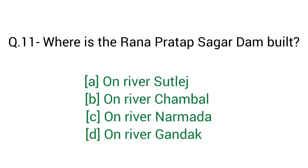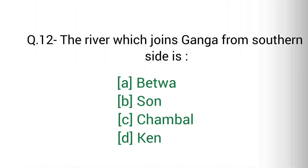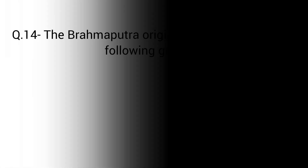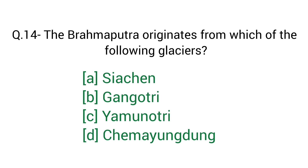Question number 11: Where is the Rana Pratap Sagar Dam built? Right answer option B: On river Chambal. Question number 12: The river which joins Ganga from the southern side is — right answer option B: Sone. Question number 13: Which of the following rivers flows from east to west and makes an estuary? Right answer option C: Narmada. Question number 14: The Brahmaputra originates from which of the following glaciers? Right answer option D: Chemayungdung.